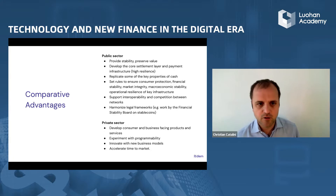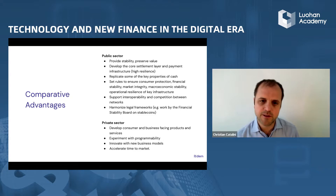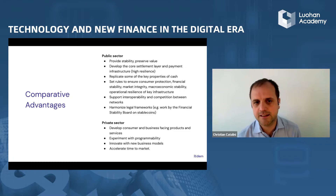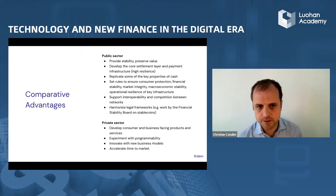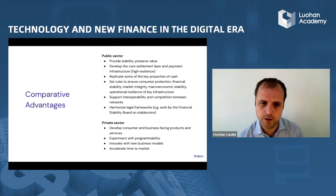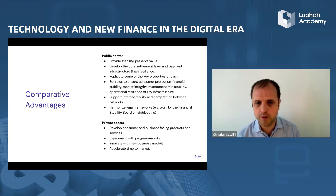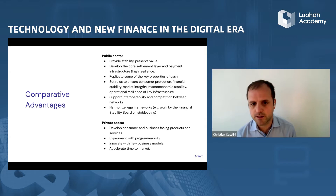At a very high level, what are some of the comparative advantages? The public sector provides monetary policy, stability, and preserves value. There's no point in having a stablecoin if you have a CBDC token that's clearly superior and provides better consumer protection. If you think of the public sector providing the core settlement layer, then on top of that — very much like the internet — you can have all sorts of additional protocols that customize that network for different industry verticals and use cases. A really important role for the public sector is also setting rules across dimensions like consumer protection, financial stability, competition, market integrity, and availability of infrastructure under stress conditions, as well as forcing interoperability between different networks. And on a global perspective, harmonizing legal frameworks — for example, the work by the FSB on global stablecoins has been extremely helpful in driving some degree of convergence on these topics.